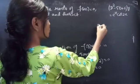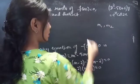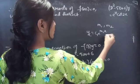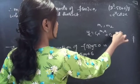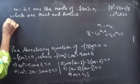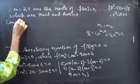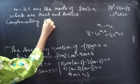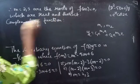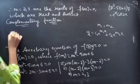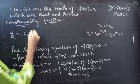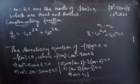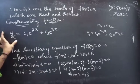We know that when two roots m1 and m2 are real and distinct, then yc = c1·e^(m1·x) + c2·e^(m2·x). So the complementary function is yc = c1·e^(2x) + c2·e^(3x).